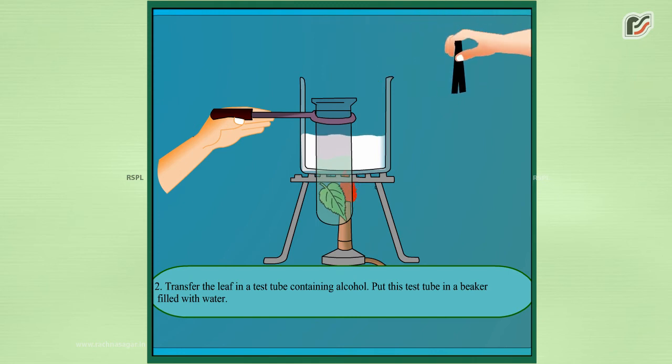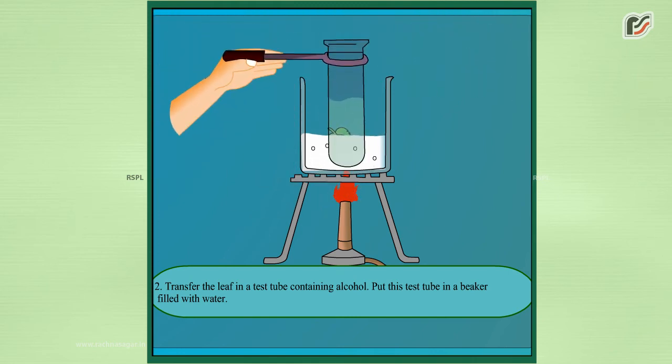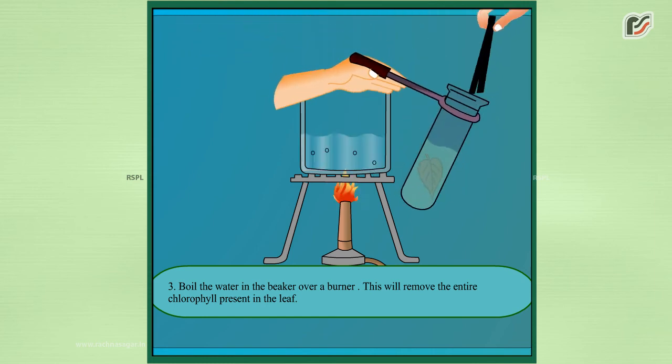Put this test tube in a beaker filled with water. Boil the water in the beaker over a burner. This will remove the entire chlorophyll present in the leaf.